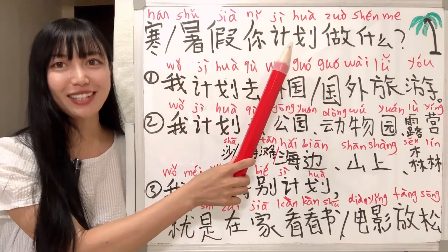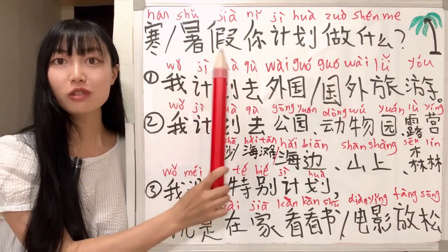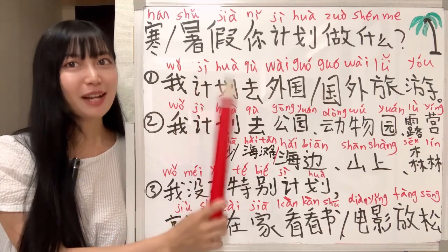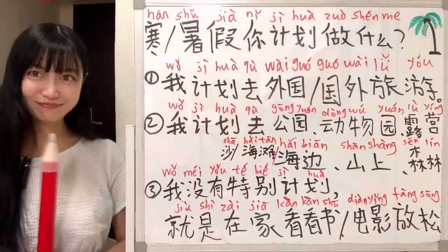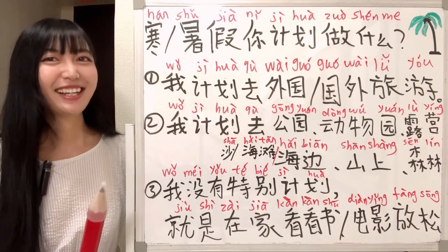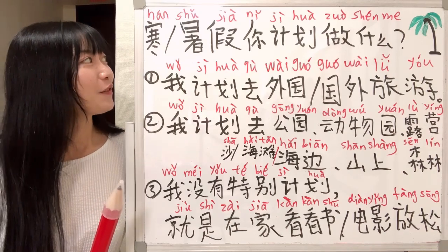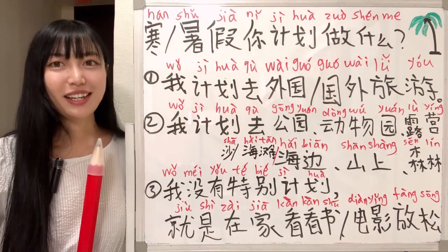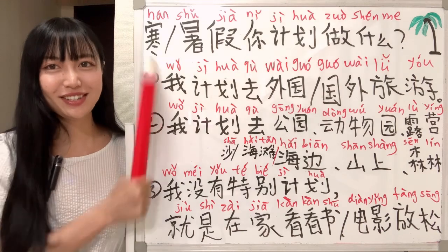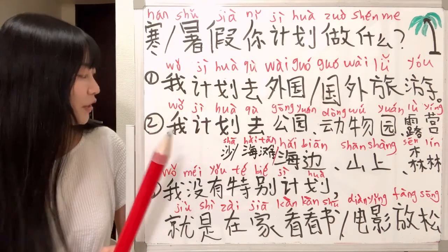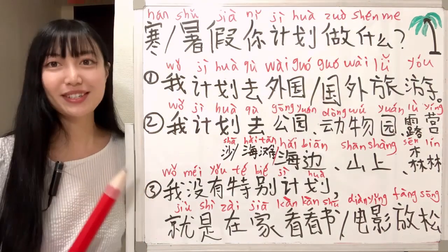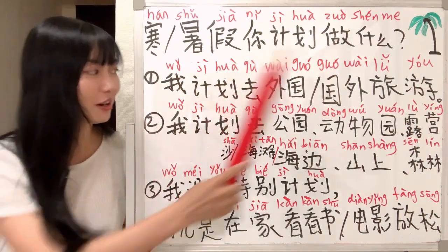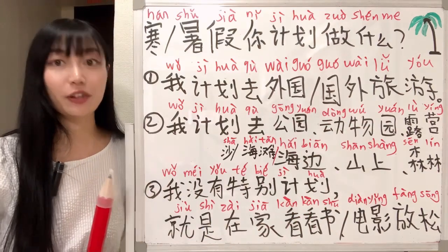What do you plan to do in winter holiday? 寒假你计划做什么? What do you plan to do in summer holiday? 暑假你计划做什么? Now we know how to ask someone's plans for their summer holidays. And how do we answer this question? Today we are going to learn three ways to answer this question, and we are going to learn a lot of useful vocabulary as well.